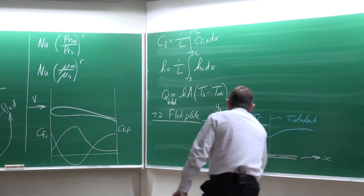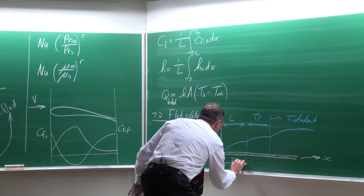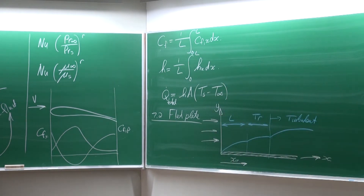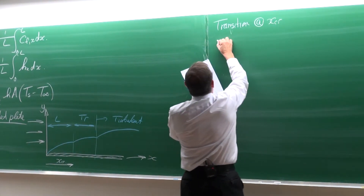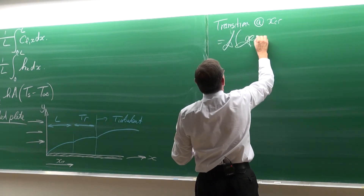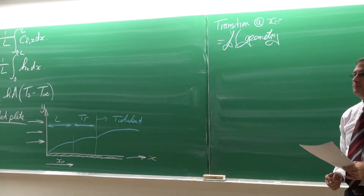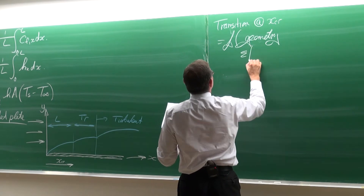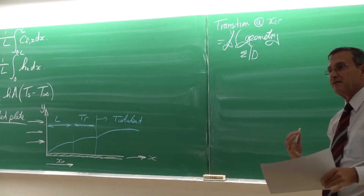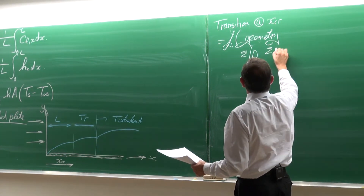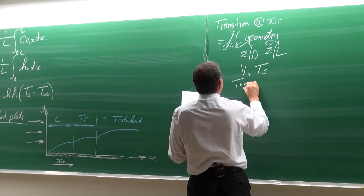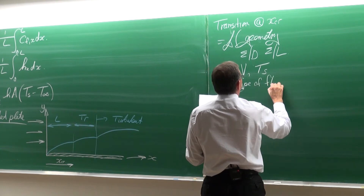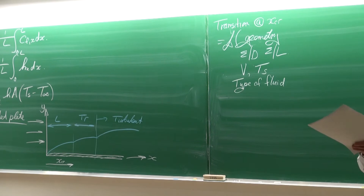Where transition occurs is known as x_critical, x_CR. The transition at x_CR is a function of: firstly the geometry of the object, secondly the surface roughness (ε/L), thirdly the velocity, the surface temperature, and the type of fluid. All those things influence where transition starts.